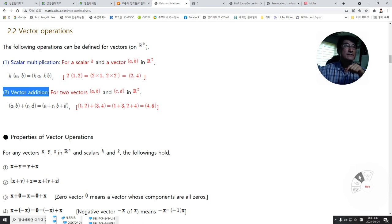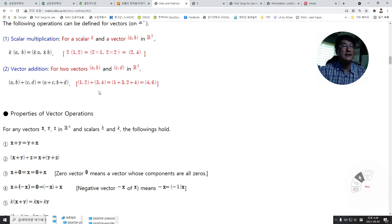Second, vector addition. For vectors in R2, the addition of these two vectors is defined this way. For example, if we have two vectors (1, 2) and (3, 4), then the addition of these two vectors is going to be (4, 6), the addition of each component at the same place.